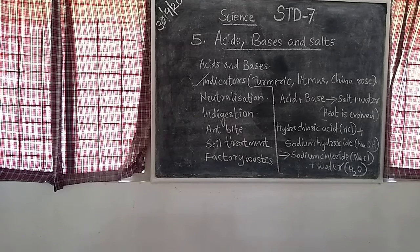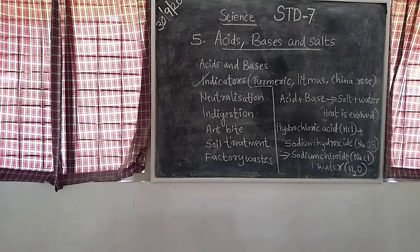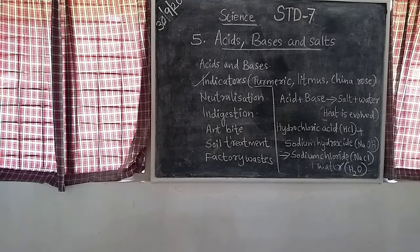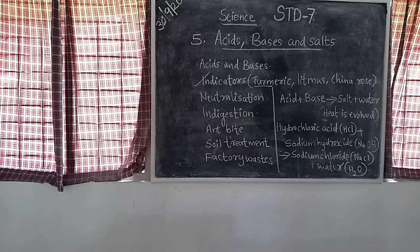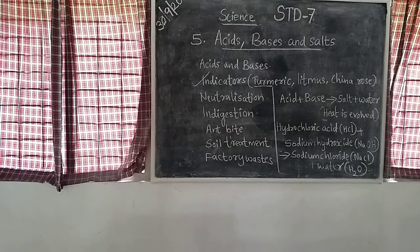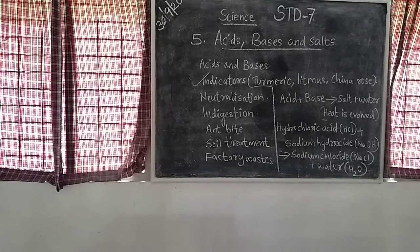The next type of natural indicator is china rose. China rose indicator turns an acidic solution dark pink in color and turns a basic solution green.